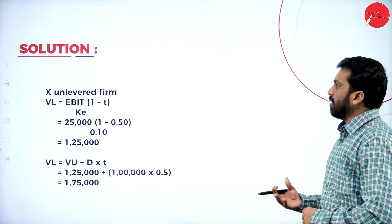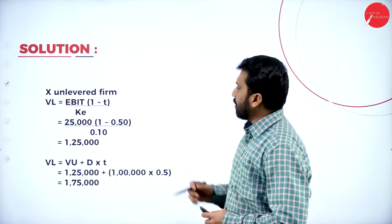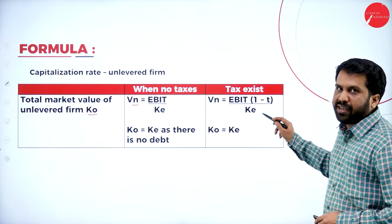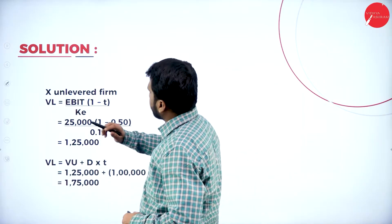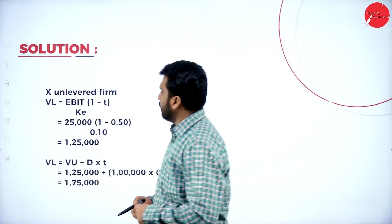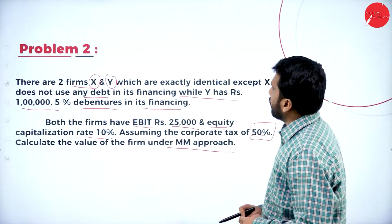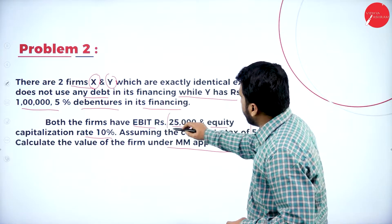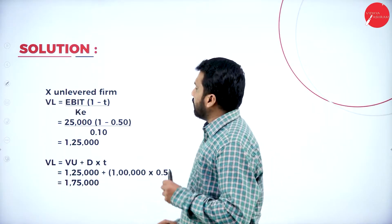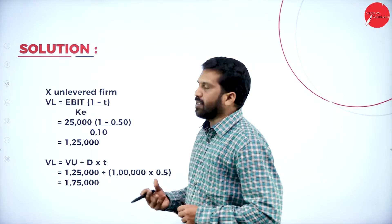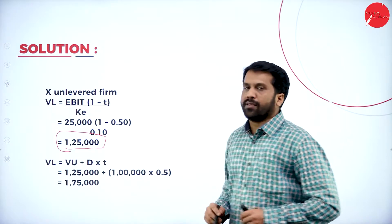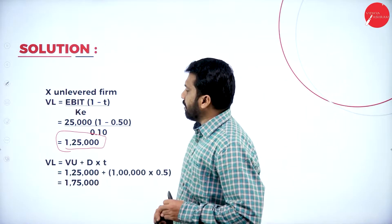We start with the unlevered firm X. The formula is: VU = EBIT × (1 − T) divided by cost of equity. EBIT is 25,000, tax rate is 0.5, so (1 − 0.5) = 0.5, and cost of equity is 0.10. Therefore VU = 25,000 × 0.5 divided by 0.10 = 1,25,000.